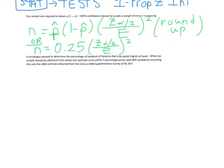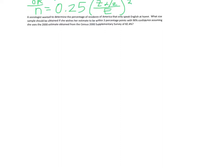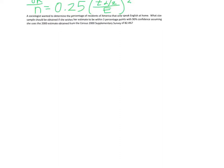Alright, and again, we would round up. So let's see this in action. So we have that a sociologist wanted to determine the percentage of residents of America that only speak English at home. What size sample should be obtained if she wishes her estimate to be within 3 percentage points with 90% confidence assuming she uses a prior estimate obtained from the census of 82.4%. Okay, so what size sample? So that's telling us to use our formula. So we have to figure out n.